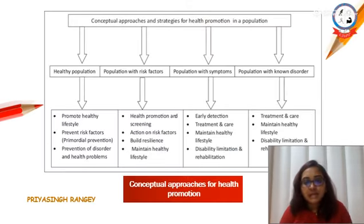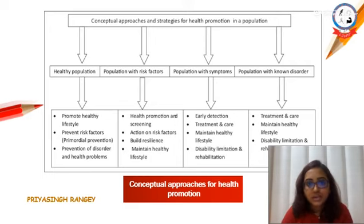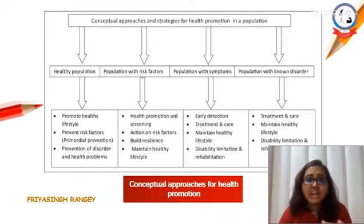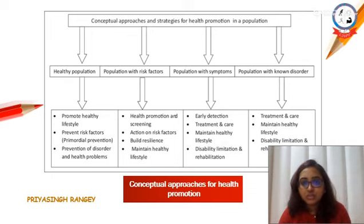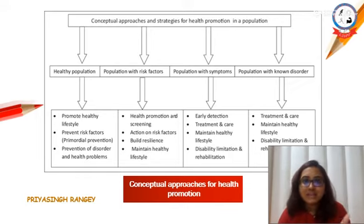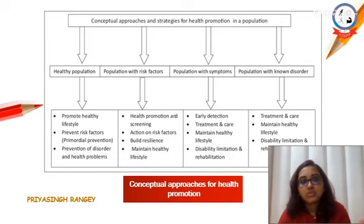The different approaches that can be used for health promotion are the conceptual approaches, which you can see here in the video. According to the conceptual approach, we divide the entire population into four different categories: the healthy population, the population that has some risk factors, the population that is showing symptoms of any particular disease, and the population with a known disorder — that is, they have been diagnosed with that particular disorder. We use different approaches for health promotion for each category.